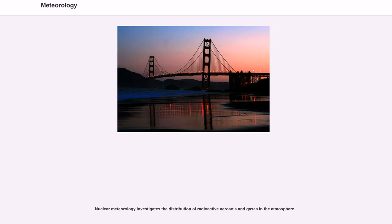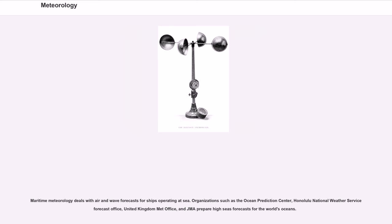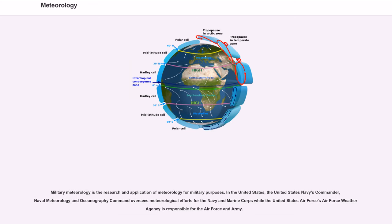Nuclear meteorology investigates the distribution of radioactive aerosols and gases in the atmosphere. Maritime meteorology deals with air and wave forecasts for ships operating at sea. Organizations such as the Ocean Prediction Center, Honolulu National Weather Service Forecast Office, United Kingdom Met Office, and JMA prepare high seas forecasts for the world's oceans. Military meteorology is the research and application of meteorology for military purposes. In the United States, the United States Navy's Commander, Naval Meteorology and Oceanography Command oversees meteorological efforts for the Navy and Marine Corps while the Air Force Weather Agency is responsible for the Air Force and Army.